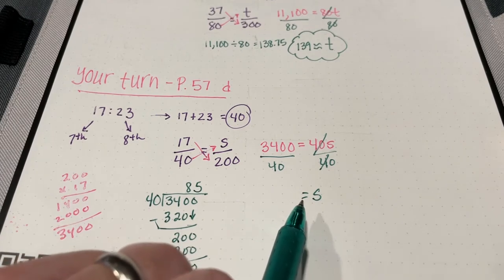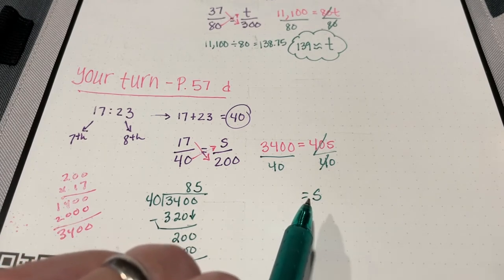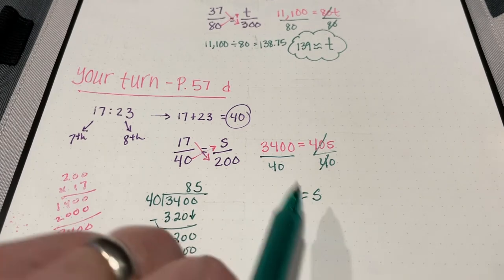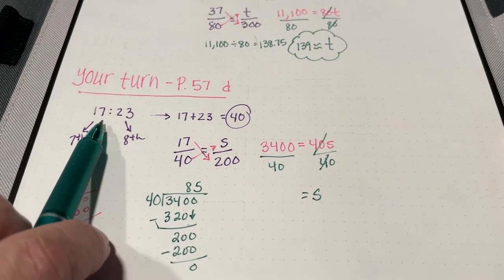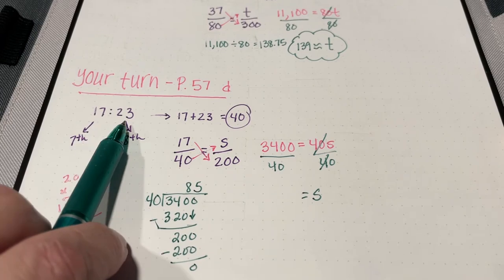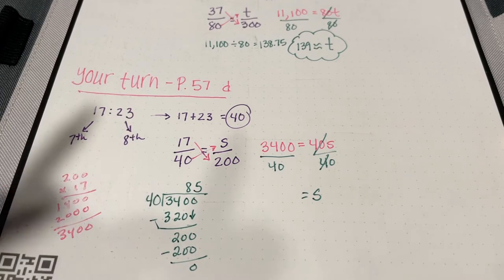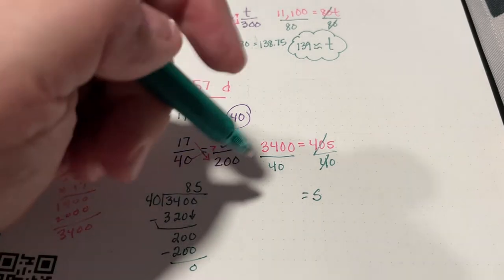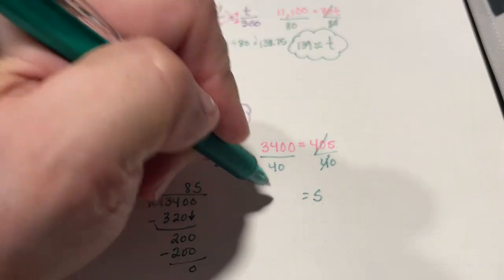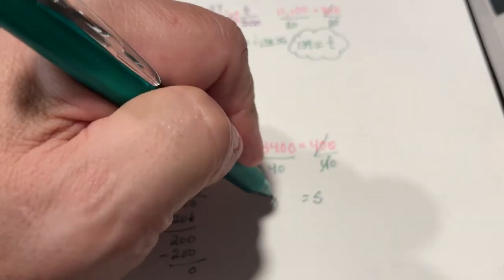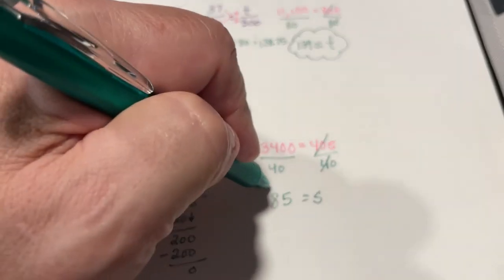If there were 200 students altogether with this ratio of 7th to 8th graders, we would expect to have 85 seventh graders.